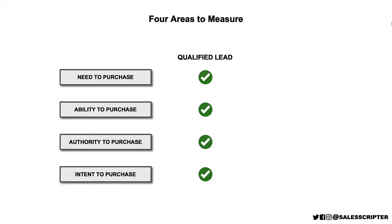When asking these questions, you want to assess their answers and figure out how strong or weak the prospect is in each area. An extremely qualified lead needs to be medium to strong in all four areas — they need to need what you sell, have the ability to buy it, have the authority to say yes, and genuinely intend to purchase from you. If the prospect is strong in all areas except one, it's not a completely qualified lead. But figuring out which area they're weak in will tell you exactly what you need to do.